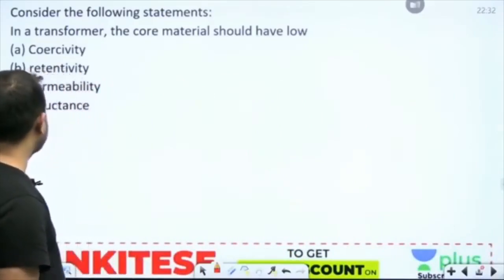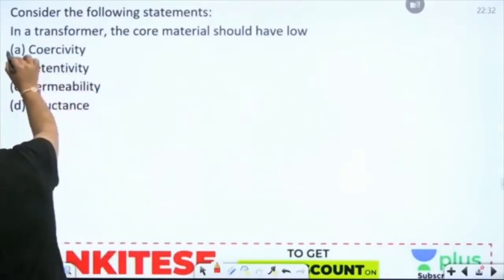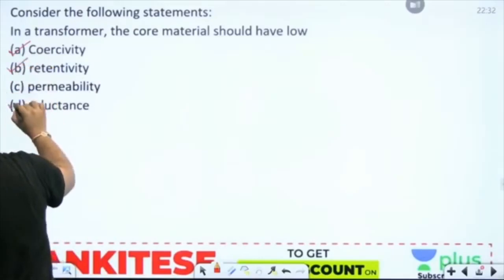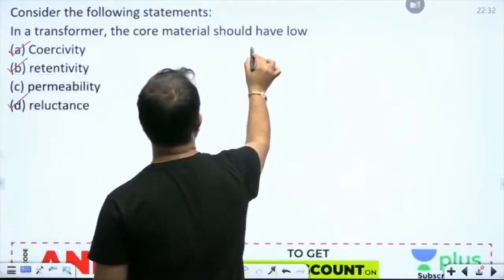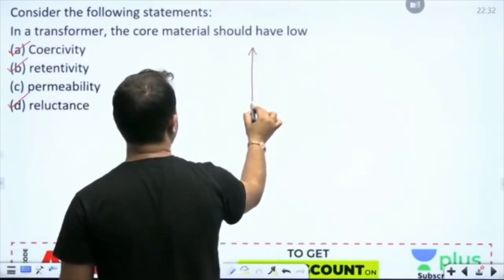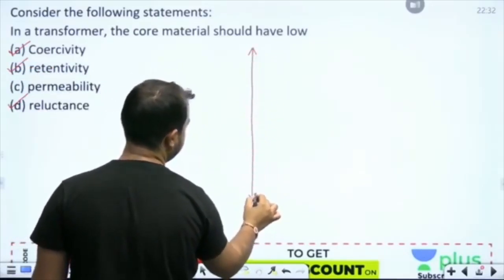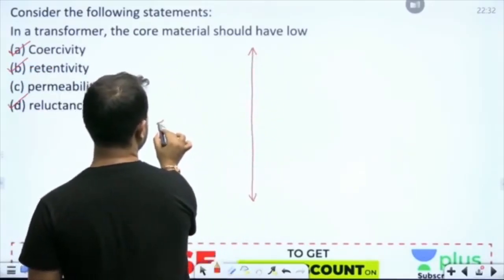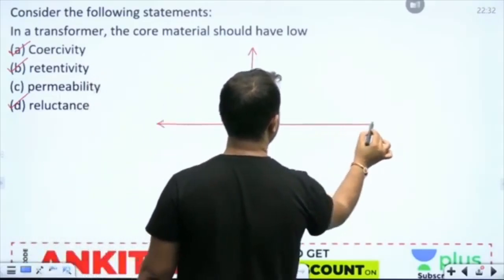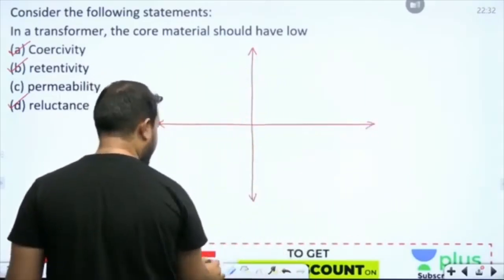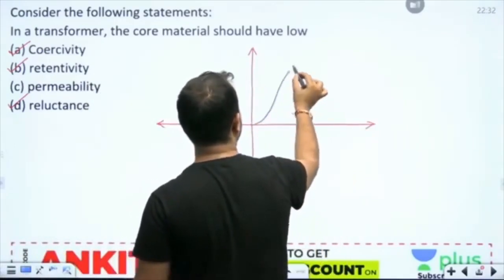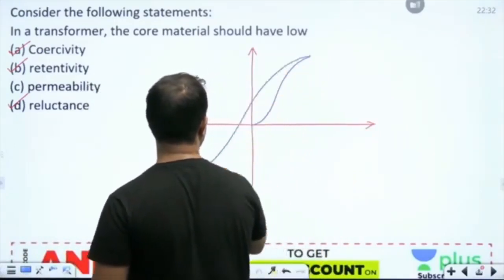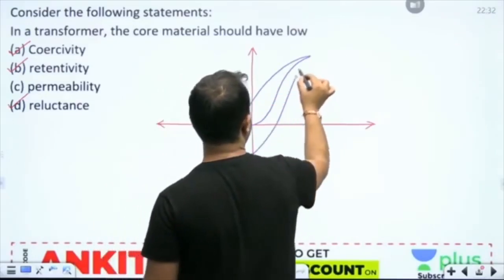The answer to this is A, B, D. What we are saying is that in the core material of a transformer, the hysteresis loop should be narrow.